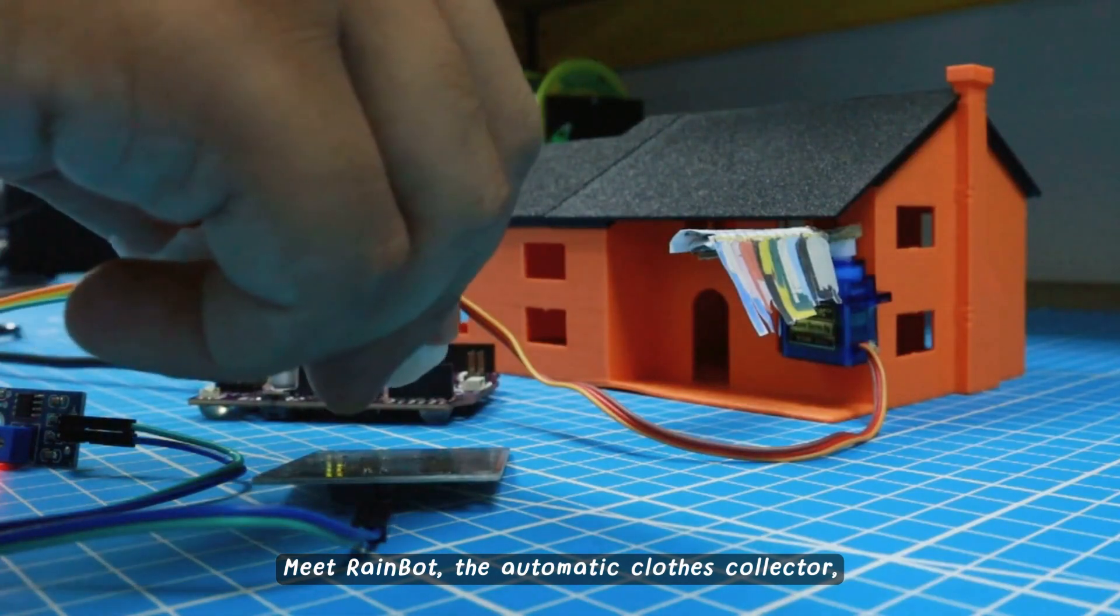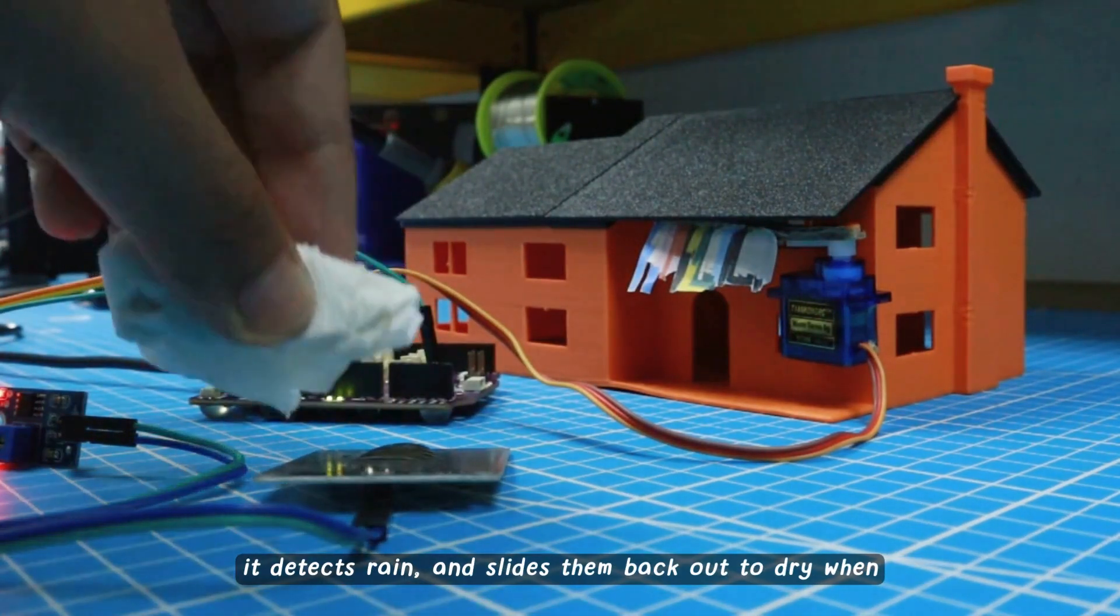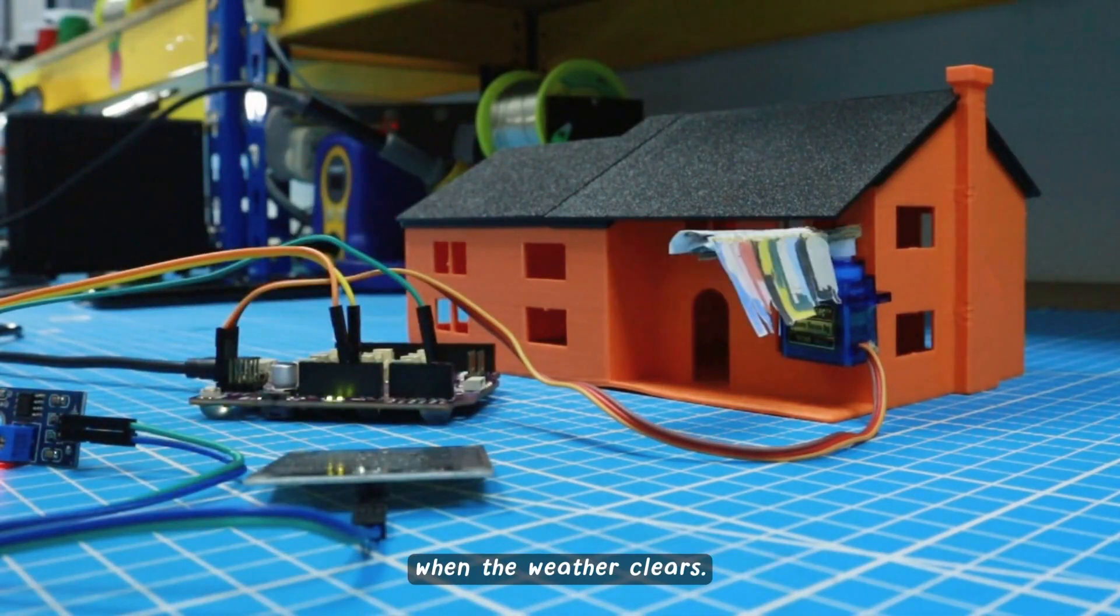Meet RainBot, the automatic clothes collector, a smart solution that moves your clothes under shelter when it detects rain, and slides them back out to dry when the weather clears.